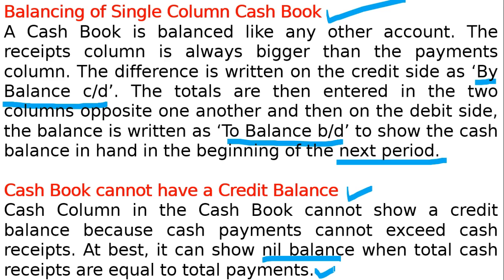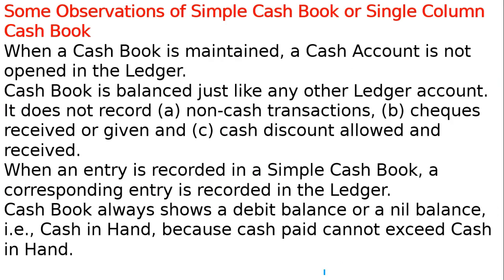So in a simple cash book, the balance cannot go into the minus or credit side. Cash is an asset, and an asset always has a debit balance. These are some key observations of a simple cash book — also called single column cash book.